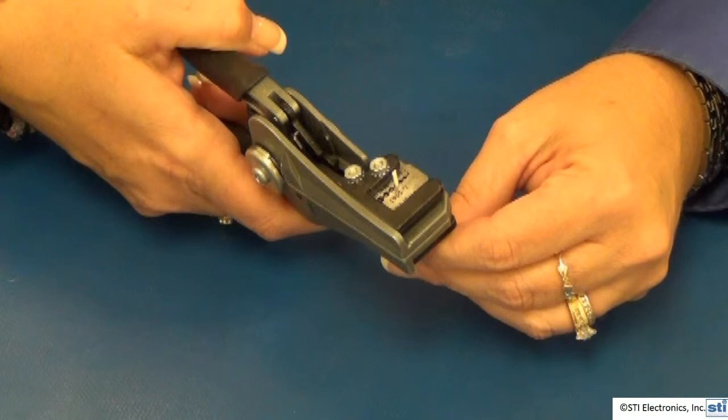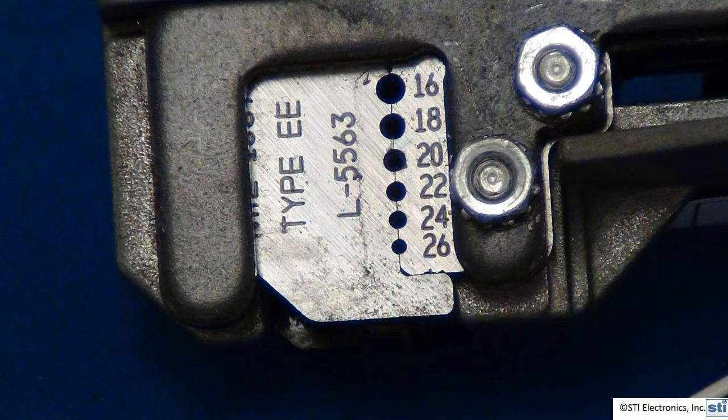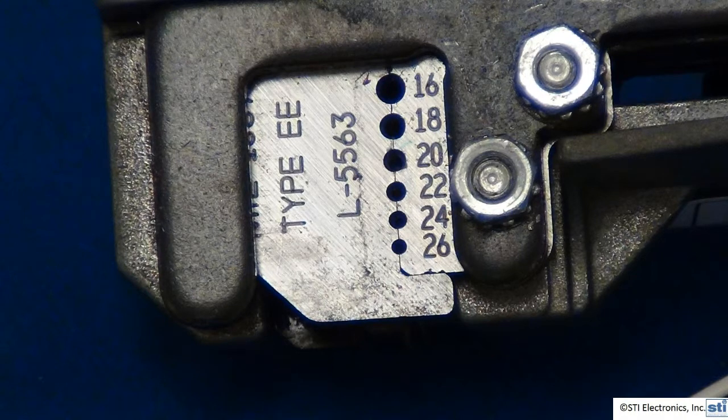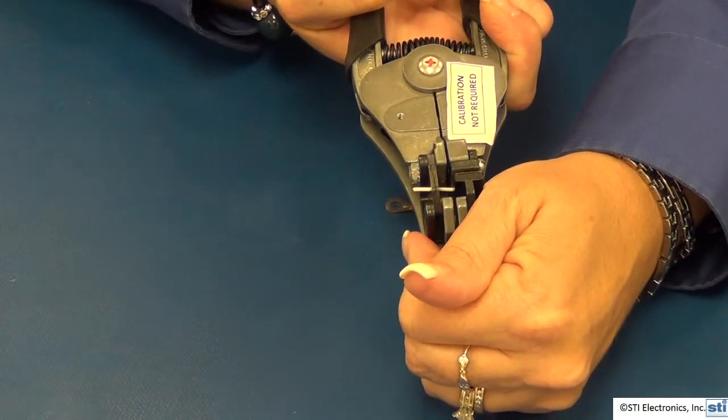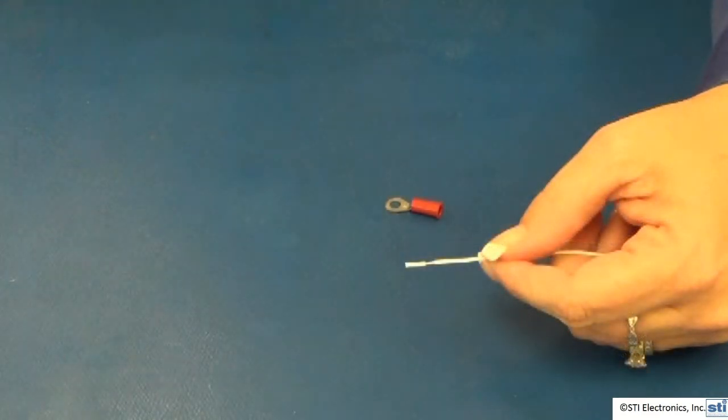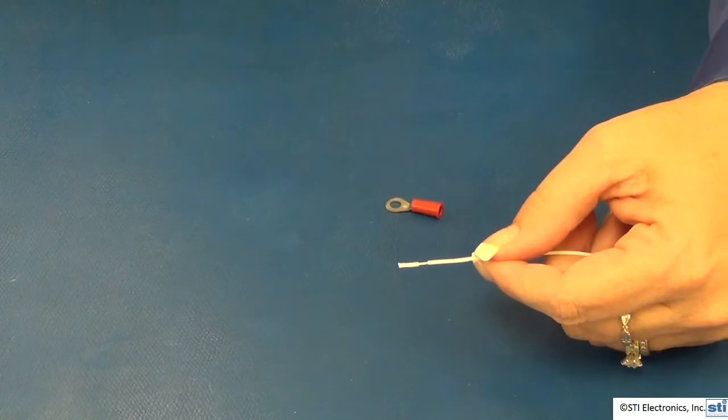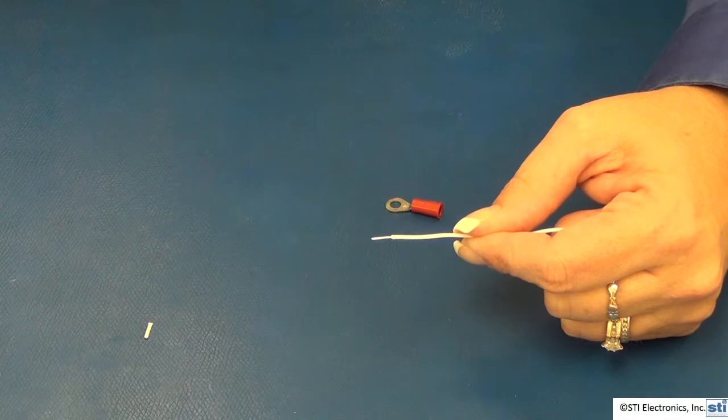As you can see, we're inserting the wire into a special portion of the dies. This close-up view shows us that the die has several openings that correspond to different wire gauges. Once we have this locked in, we use the plier grips to separate the wire insulation on the wire. And then, remove the insulation slug by twisting it in the same direction as the wire lay.